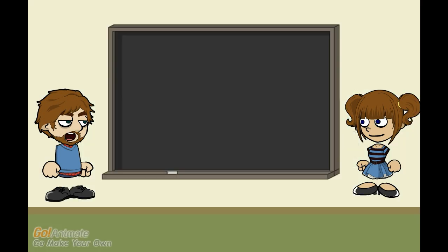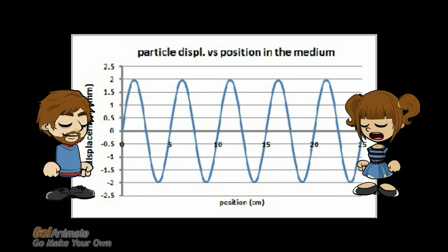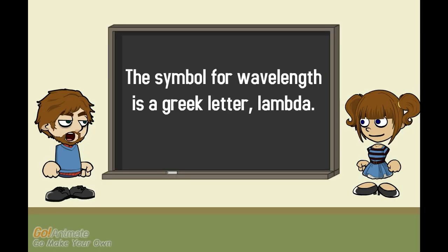There is a second graph that we can make. It shows a freeze-frame picture of all of the particles in the wave at the same time. Since the vertical axis is still particle displacement, we can use this graph to find the amplitude just like we did with the first graph. But the horizontal axis is no longer time — it now shows the position of a particle in the wave medium. We can still measure the length of a wave cycle, but now it will tell us how long the wave is. We call this wavelength. In this example the wavelength is 5 cm. We use the Greek letter lambda, which is still an L, to represent wavelength.